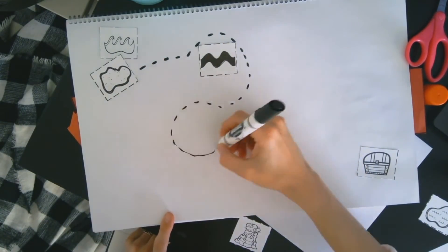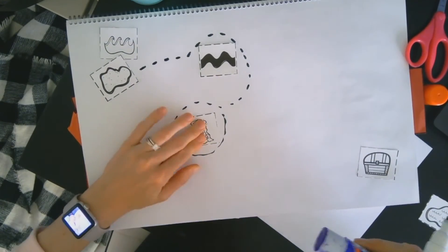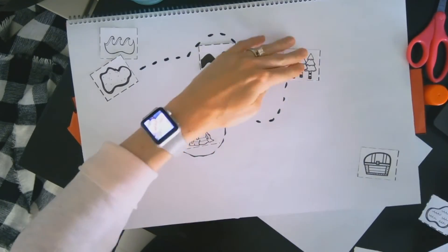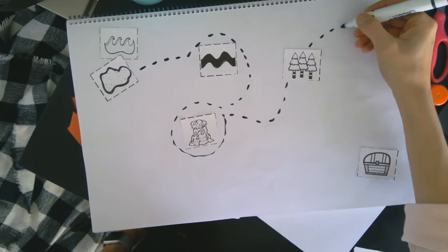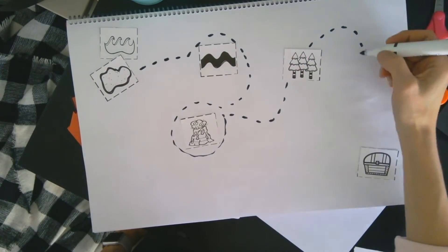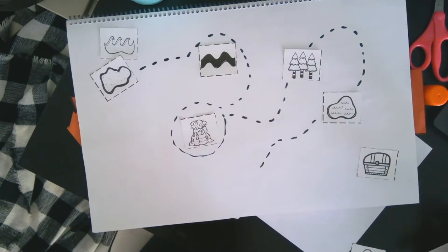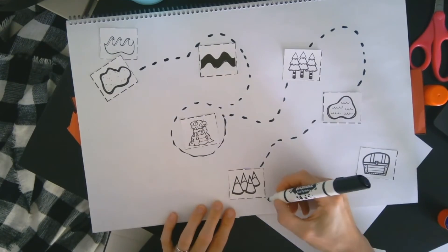Now you are going to draw dotted lines to draw the path and figure out how you want to get to your treasure. Remember, you do not have to use all of your pictures. And your map does not have to look like mine. It has to look like your own. How are you going to get to your treasure?